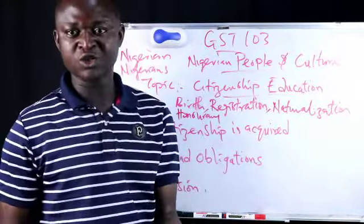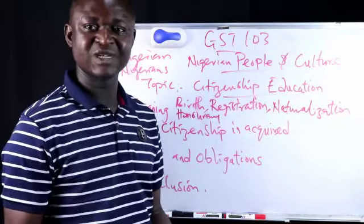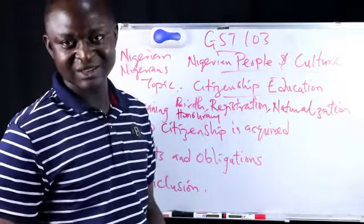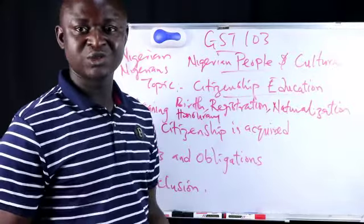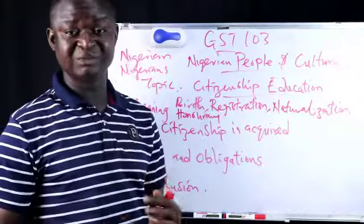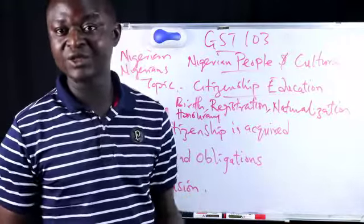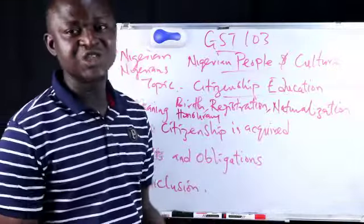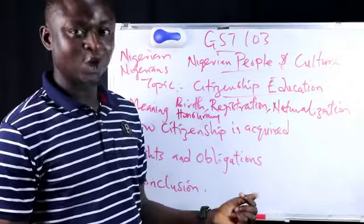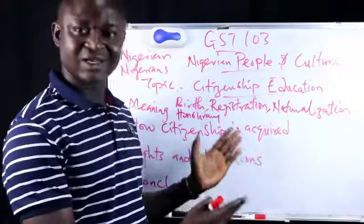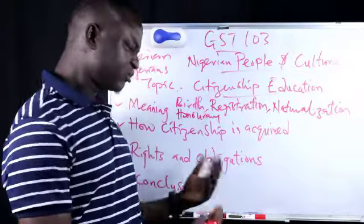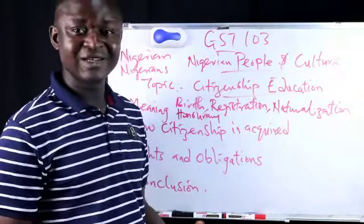You have the right to freedom of movement — you are free to move, although authorities can regulate movement in certain areas. As a citizen, freedom of movement is fundamental. You also have the right to association. As human beings we are social beings, so you have the right to associate freely. However, this does not extend to joining clandestine groups — you don't have the right to become a member of a secret society or an armed robbery gang.